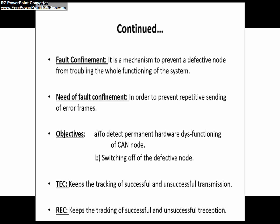Here are short notes about the four questions discussed in this video. Fault confinement is a mechanism to prevent a defective node from troubling the overall functioning of the system. We need fault confinement in order to prevent repetitive sending of error frames on a CAN bus. The objectives of fault confinement are to detect permanent outward dysfunctioning of a CAN node, and to switch off the defective node. The transmit error counter and receive error counter definitions are as shown in this slide.